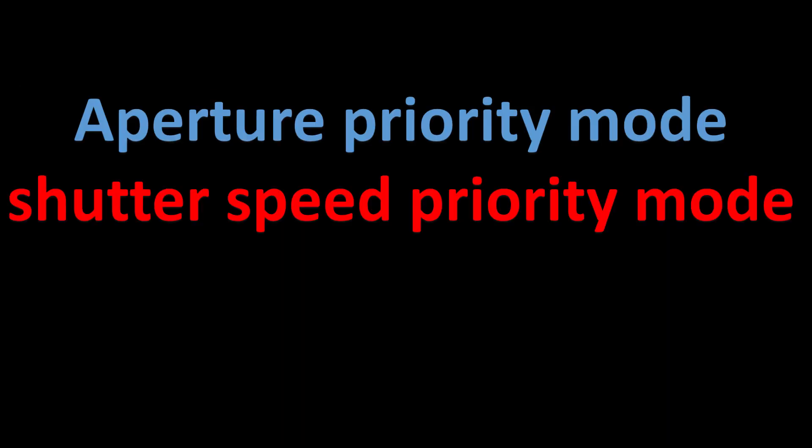In this case, we control aperture priority mode. In this case, we control shutter speed priority mode. We have two modes in the camera. If we control ISO manual, we control ISO manual. Aperture priority mode and shutter speed priority mode — in this case, we are in semi-auto mode. Not automatic mode, but not manual mode. We control the camera.